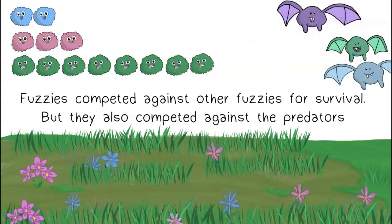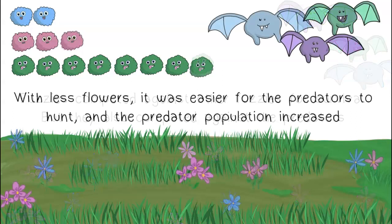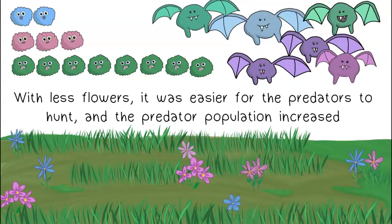Fuzzies competed against other fuzzies for survival, but they also competed against the predators. With less flowers, it was easier for the predators to hunt, and the predator population increased.